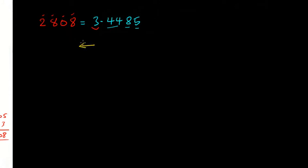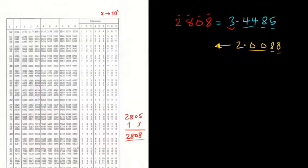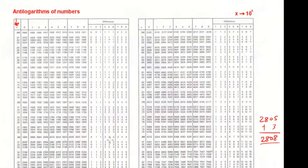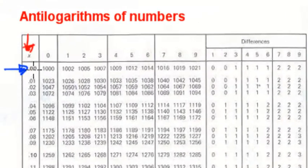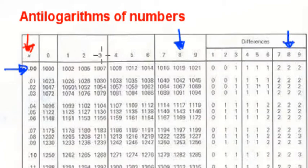Let's find the number for this logarithm. We have 2.0088. Let's find the number that has this logarithm — that's the antilogarithm. This is 0, 0 under 8, difference of 8. Come to the antilogarithm table, look for 0, 0. This is 0, 0 under 8. Then difference of 8.